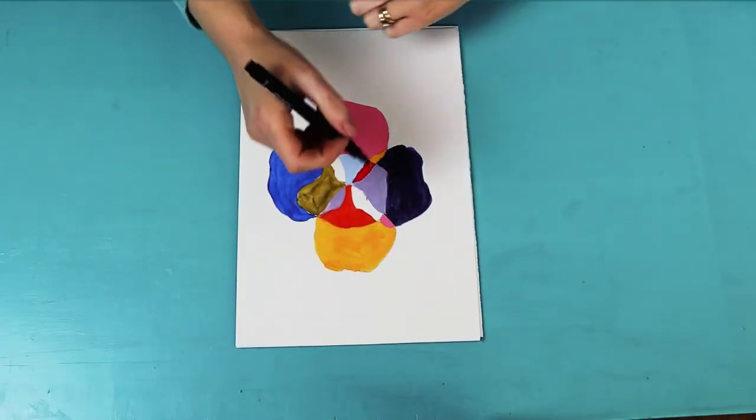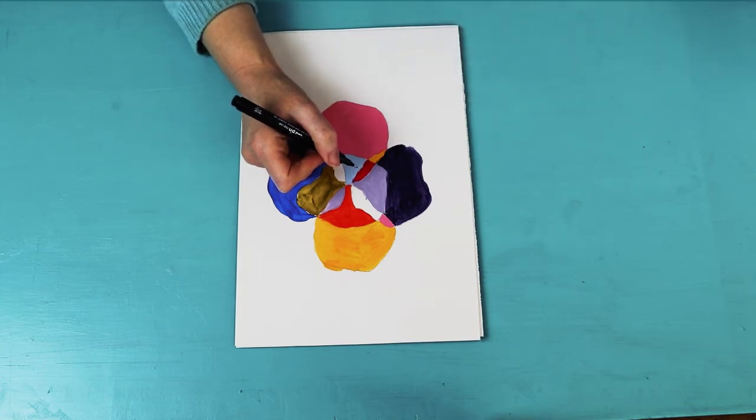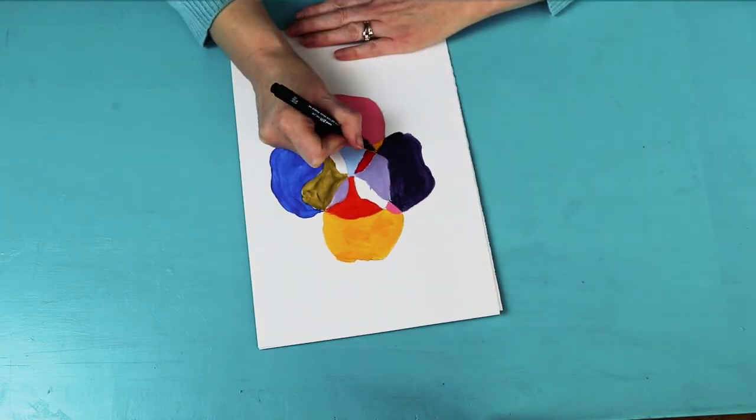Outline the shapes with a black marker or a pen when the paint is dry, but you don't have to.